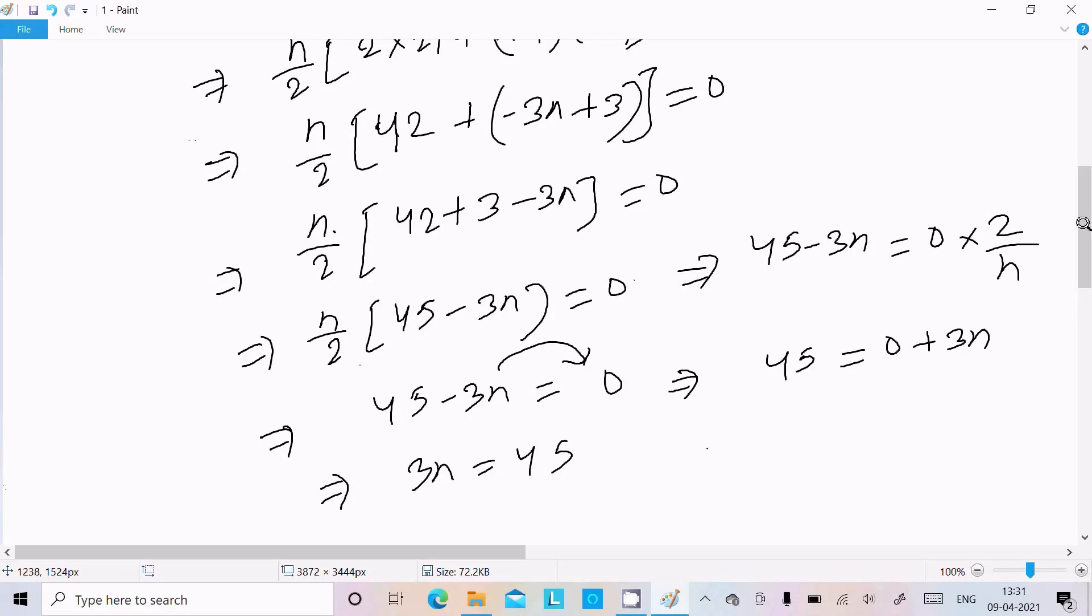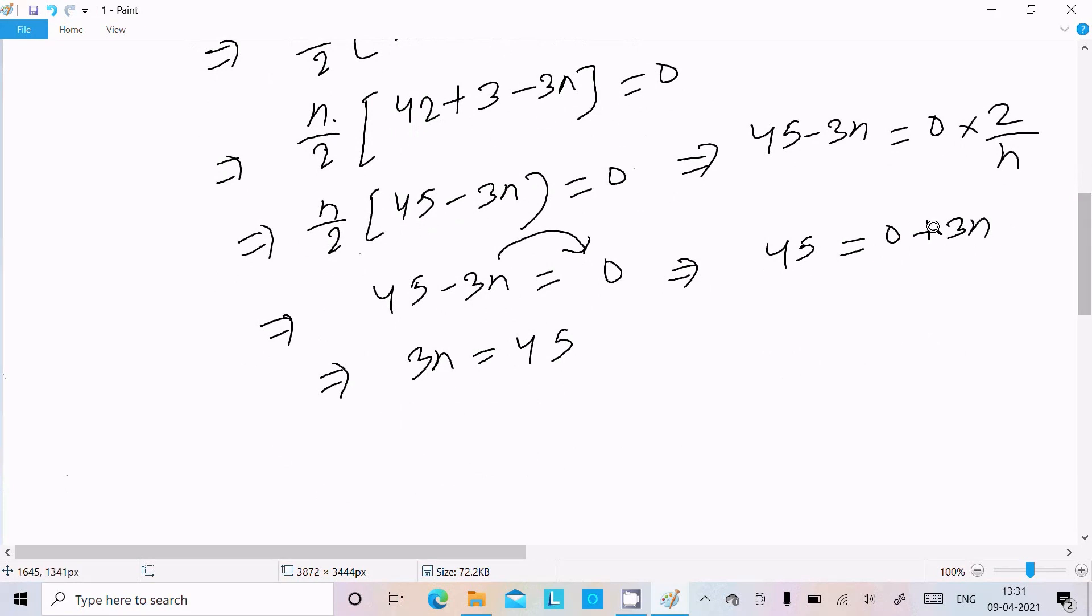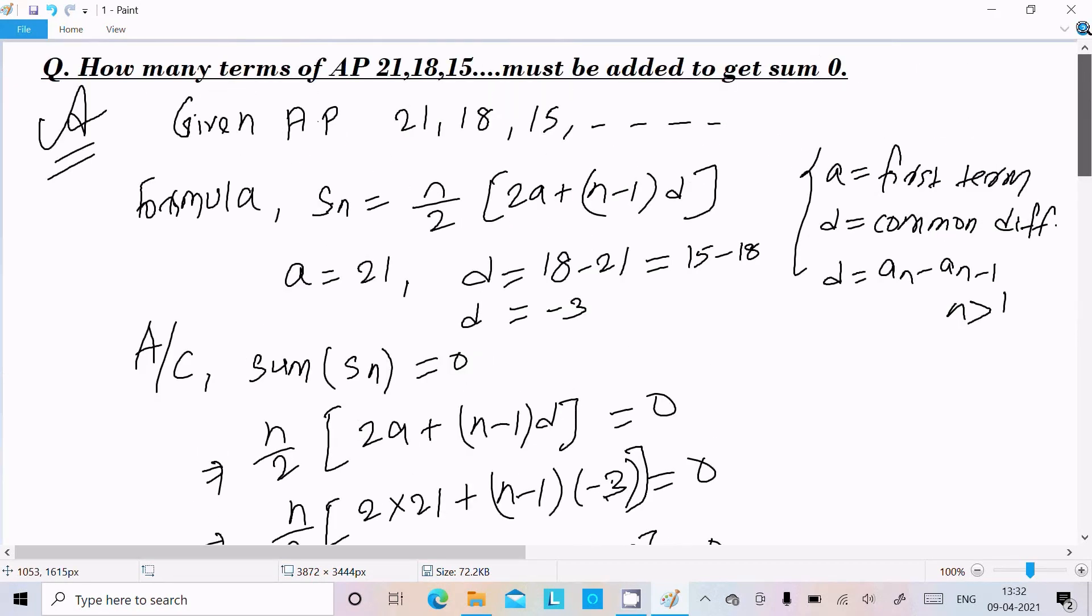So 3n equal to 45, and here after n equal to 45 by 3, it cancel by 15. So n value here I got 15. So here how many terms of AP must be added to get 0? So exactly 15 terms. 15 terms of an AP must be added to get sum equal to 0.